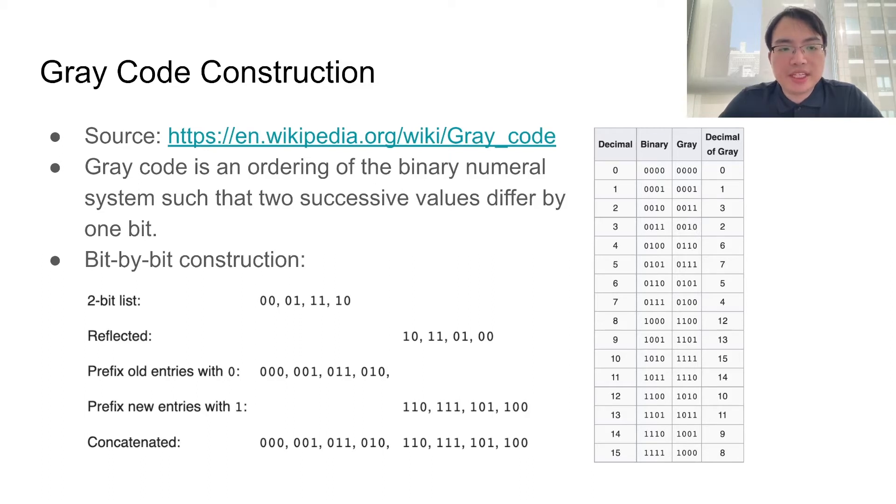So how do we construct gray code then? We will first construct gray code of length k, and then we will extend them to length k plus 1. Let's take a look at the example in the slide. Suppose we have already constructed a gray code of length 2, which have four strings.